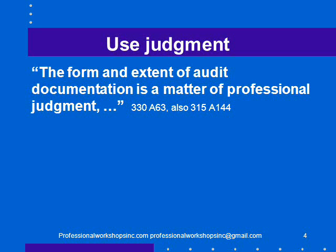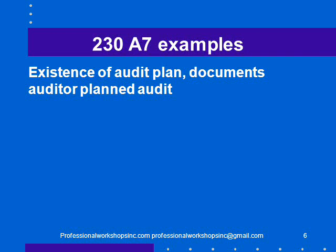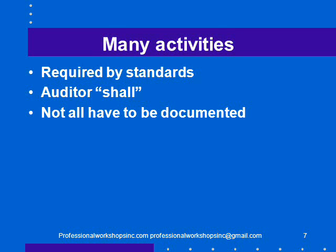The auditor is to use judgment — the form and extent of audit documentation is a matter of professional judgment, and that's Section 330. Section 315 has a similar, slightly differently worded requirement. Some of our documentation is implicit, so we know we did something by the documentation in another area. Standards say it is unnecessary for the auditor to document separately compliance with matters for which compliance is demonstrated by documents included within the audit file. For instance, the existence of an audit plan documents that the auditor planned the audit. There are many activities required by standards where the auditor shall do something, but not all of them have to be documented.